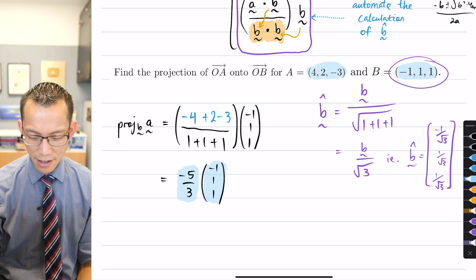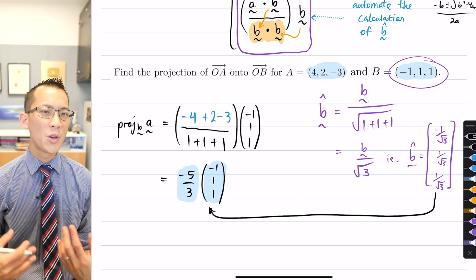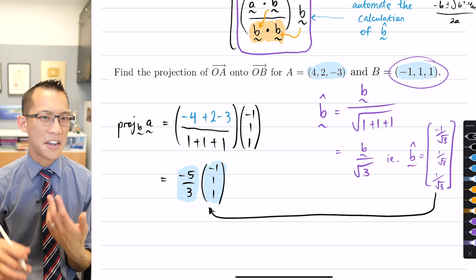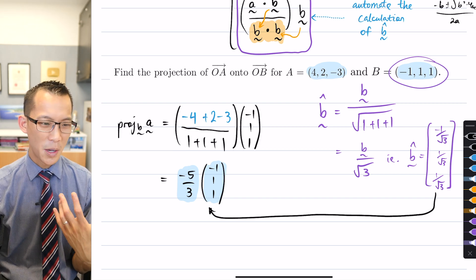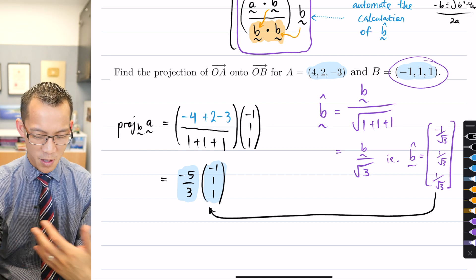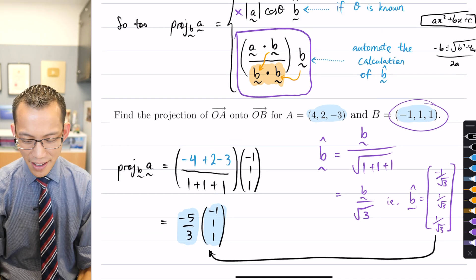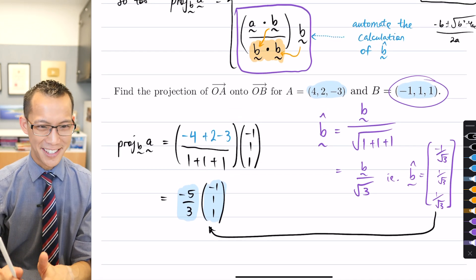Now just have a think. If you had used this formula, basically what's going to happen is all those root threes are going to cancel with another root three is going to appear. So it's a bit of a mess to end up with all those thirds and then get rid of those thirds. So there's no real reason to go using that formula. Okay, any questions? How are you doing so far?